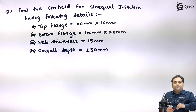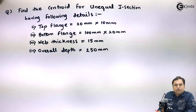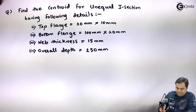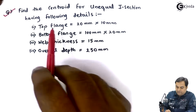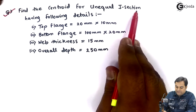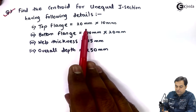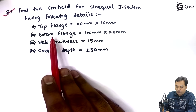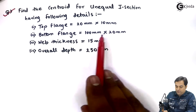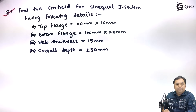In this video I will be solving the problem for centroid of an unequal I-section. The question asks us to find the centroid for an unequal I-section with the following details: top flange is 20 mm × 10 mm, bottom flange is 100 mm × 20 mm, web thickness is 15 mm, and overall depth is 250 mm.